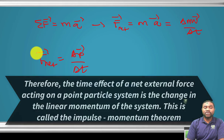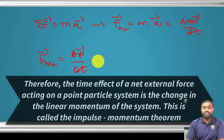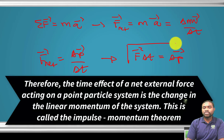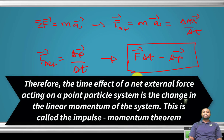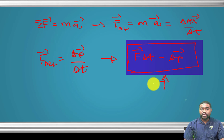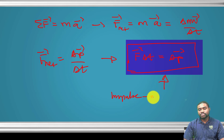Therefore, the effect of a net external force on a point particle system is the change in the momentum of the system. This is what we call the impulse-momentum theorem.